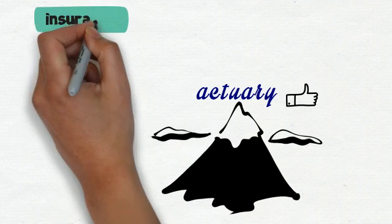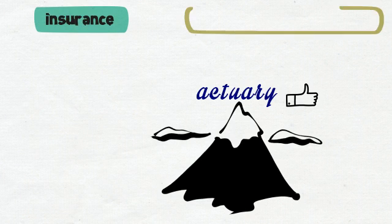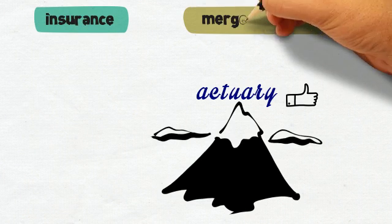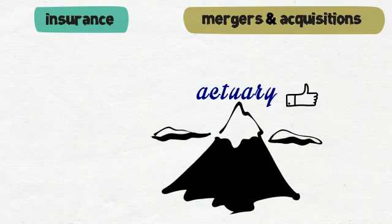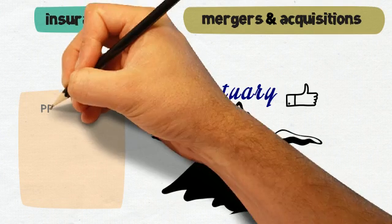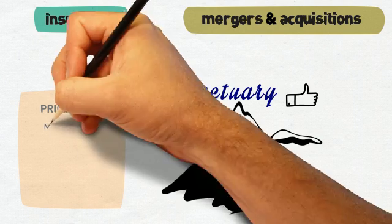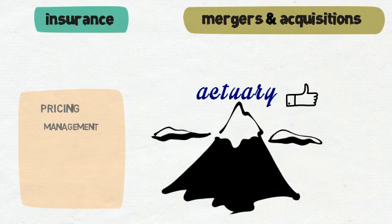As the previous example demonstrates, actuaries may work in insurance companies. They may also advise companies on issues such as mergers and acquisitions. Actuaries may also be involved in the pricing and management of large investments,